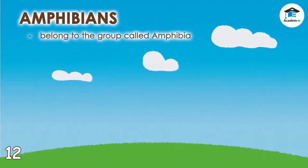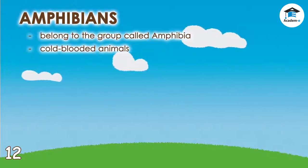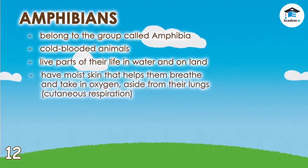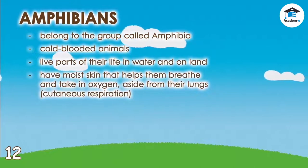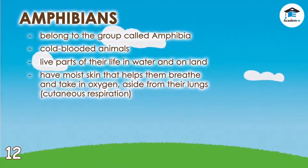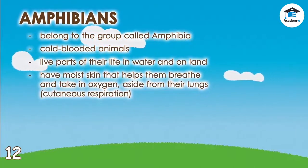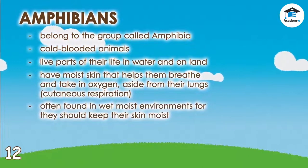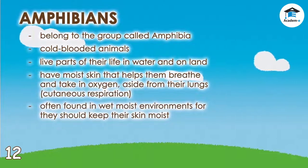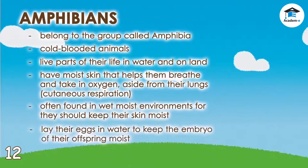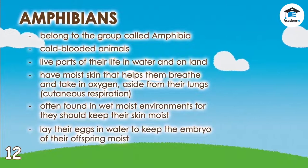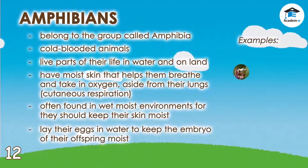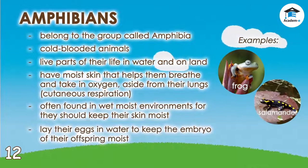Amphibians belong to the group called Amphibia. They are cold-blooded animals that live parts of their life in water and on land. They have moist skin that helps them breathe and take in oxygen, aside from their lungs — a process called cutaneous respiration. Keeping their skin moist is important, which is why they are often found in wet, moist environments. They also lay their eggs in water. Amphibians include frogs, salamanders, and newts.